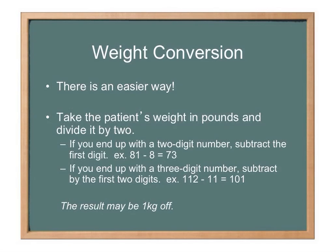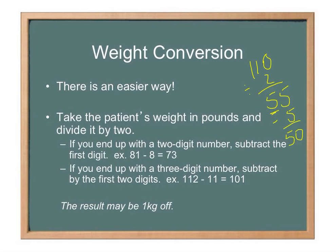Exact weight becomes very important with small children — use tools like the Broselow tape for a good rough estimate. Here's an example of the shortcut: take 110 pounds, divide by 2 to get 55. Since you have a two-digit result, subtract the first digit — 55 minus 5 equals 50. So 110 pounds equals 50 kilograms, the same answer as before.